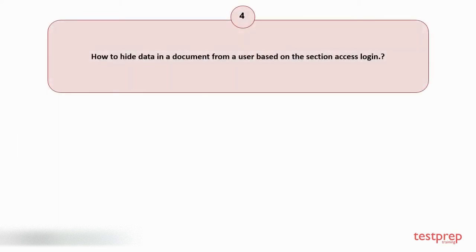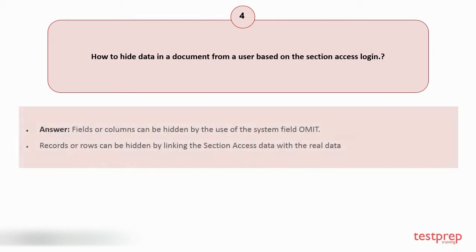Question number 4: How to hide data in a document from a user based on the section access login? 1. Fields or columns can be hidden by the use of the system field limit. 2. Records or rows can be hidden by linking the section access data with the real data.